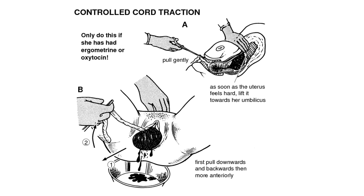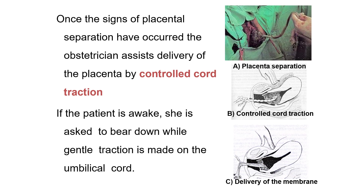For controlled cord traction, only perform it after giving ergometrine or oxytocin. Gently pull the umbilical cord with one hand while applying counter-pressure over the uterus towards the umbilicus with the other hand. The direction of pull should first be downward, then backward, then brought anteriorly. Once signs of placental separation have occurred, the obstetrician assists delivery of the placenta using controlled cord traction.